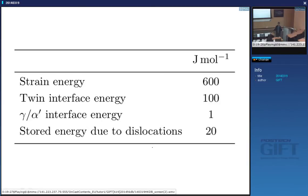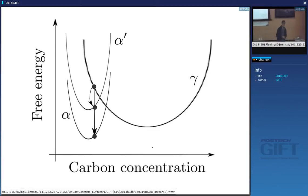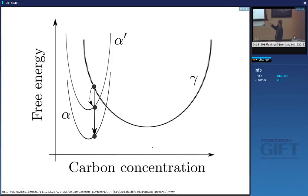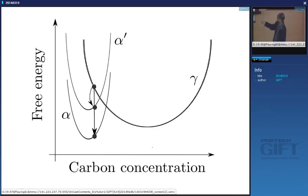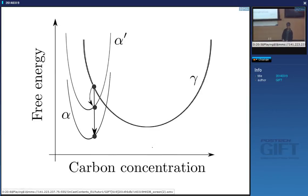We need to undercool below T0 until the chemical free energy change becomes at least 700 joules per mole. What we do is raise the free energy curve of martensite relative to that of ferrite by the stored energy term of about 700 joules per mole. So the net free energy change is smaller than for equilibrium ferrite, and that is what distinguishes martensite from ferrite of the same composition — it has stored energy in the form of strain, twin interfaces, and dislocations.